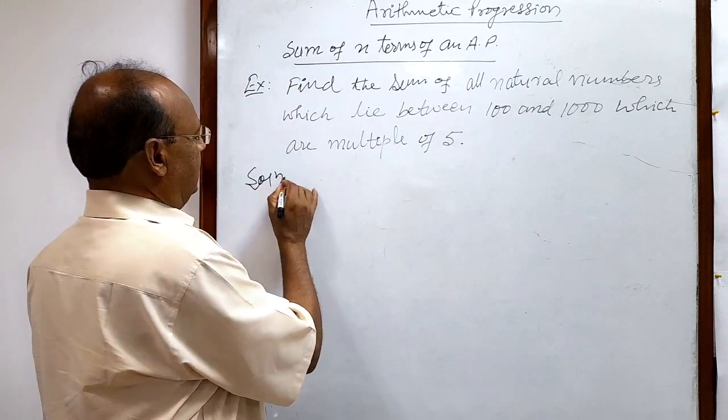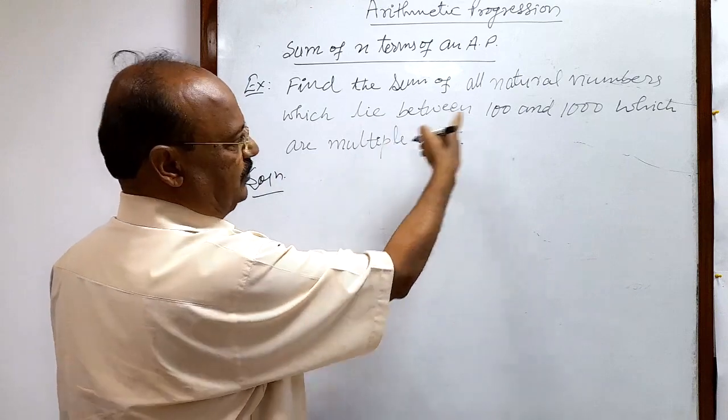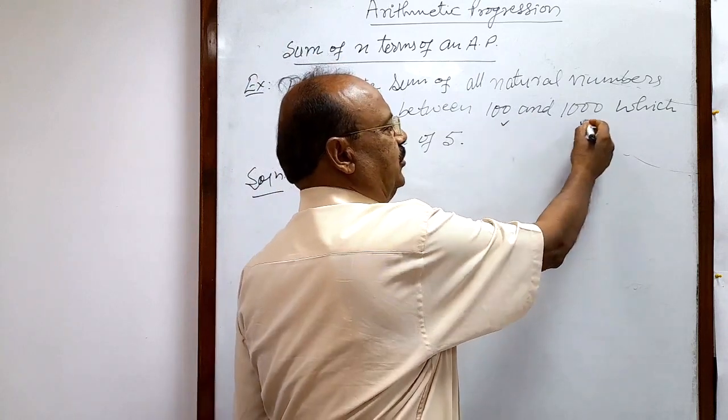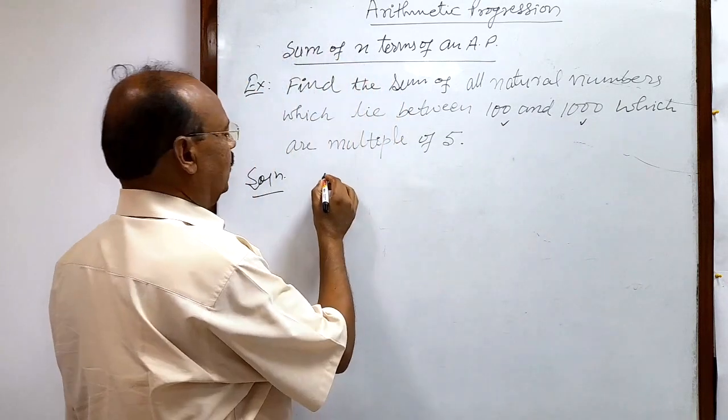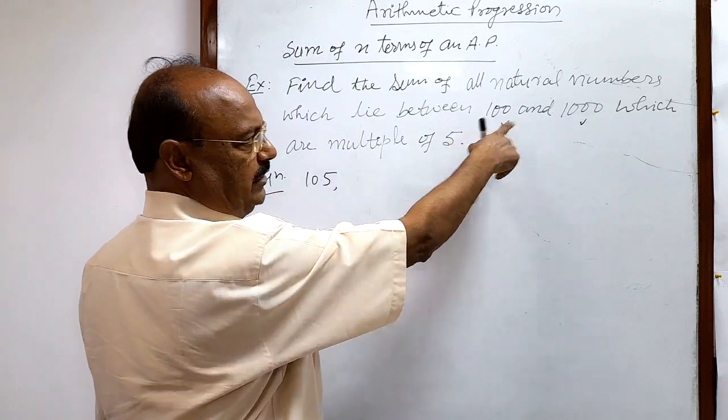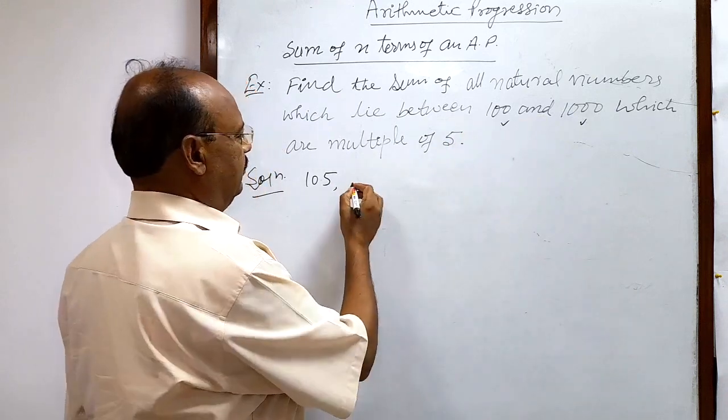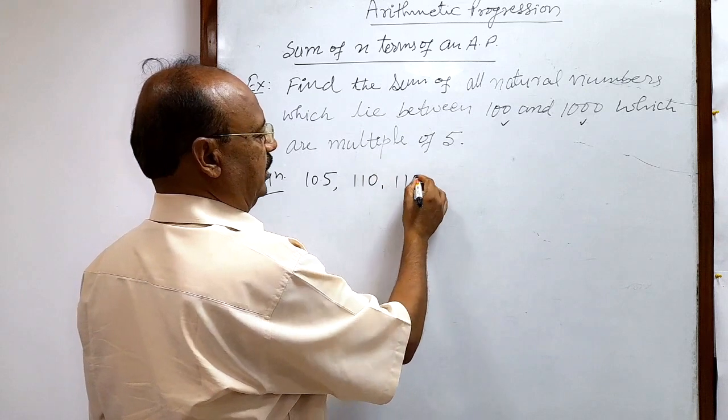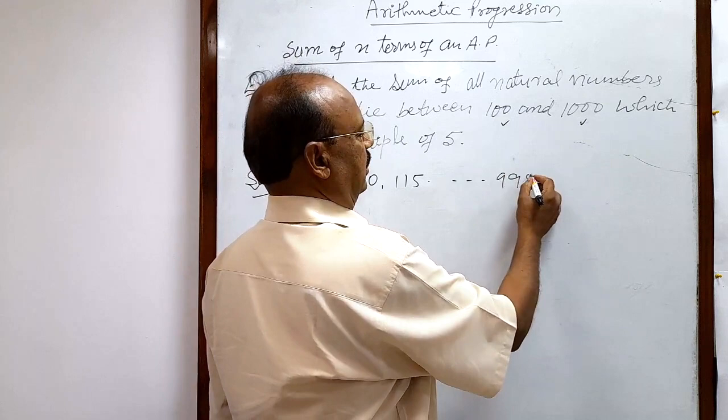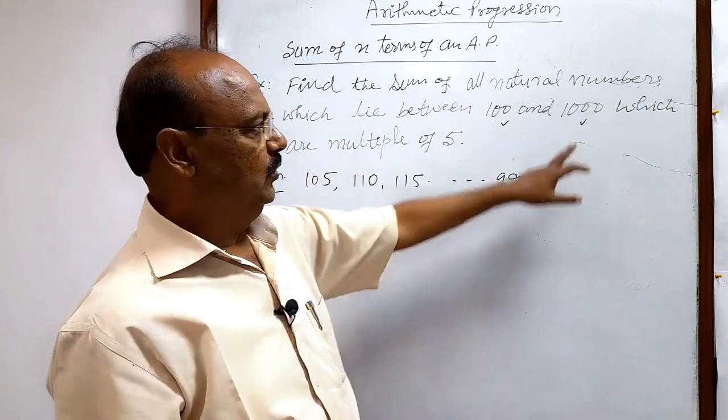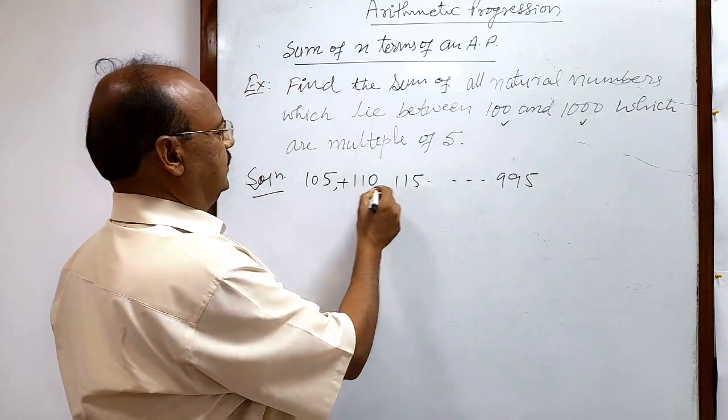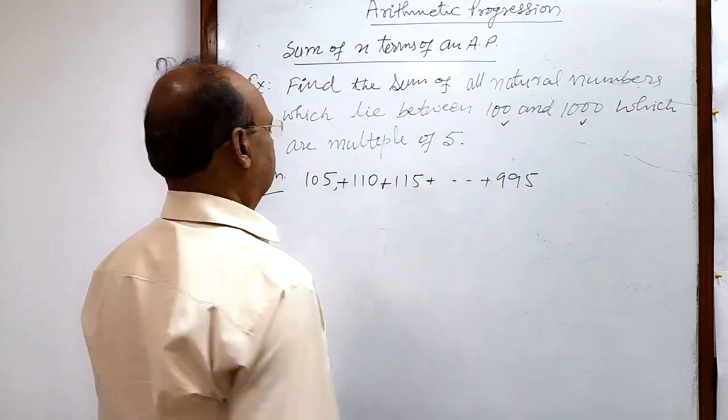So here numbers are between 100 and 1000. We need not consider these two numbers, only between these two numbers. So these numbers will be 105, 110, 115, and so on up to 995, which is 5 less than 1000, and we have to find the sum of these numbers. This is the question.